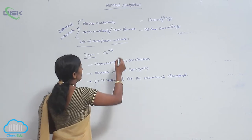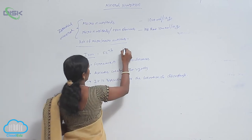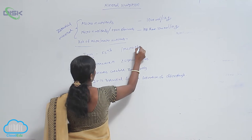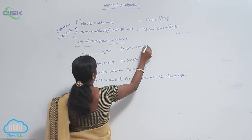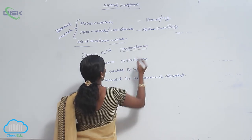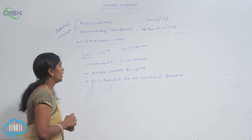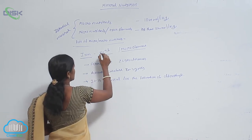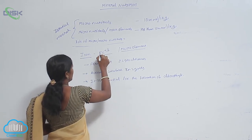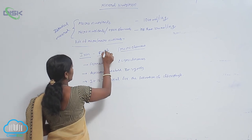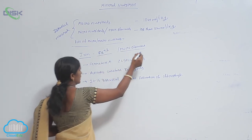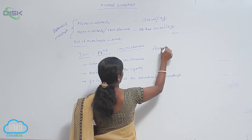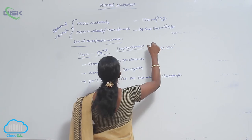Iron is a micro element, also called a trace element. The absorbed form of iron in plants is called ferric iron, written as Fe³⁺.